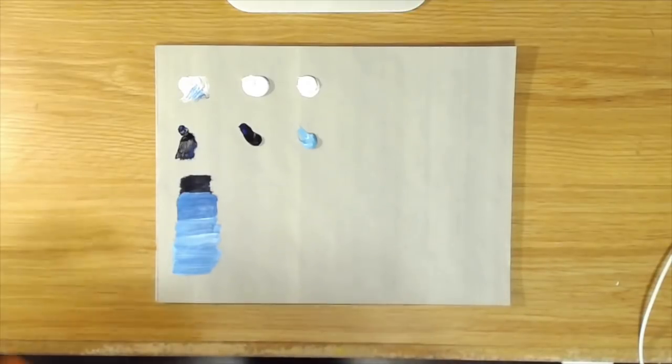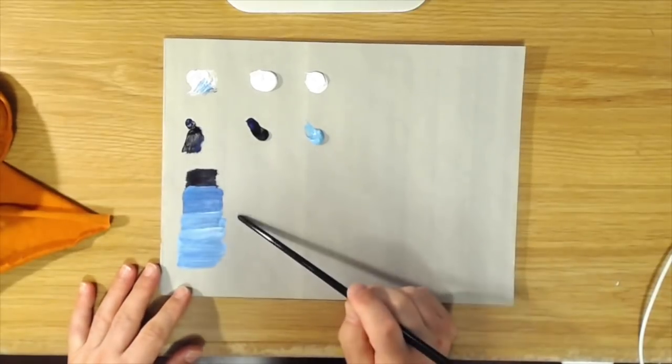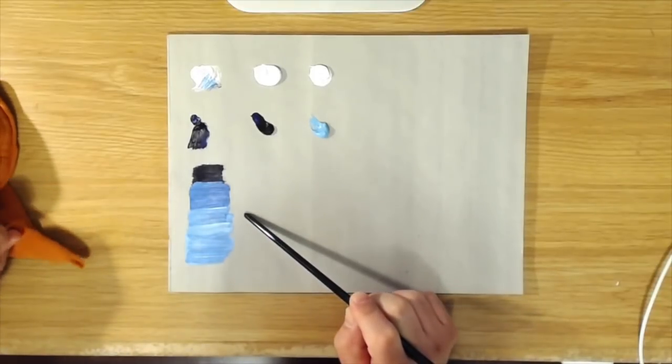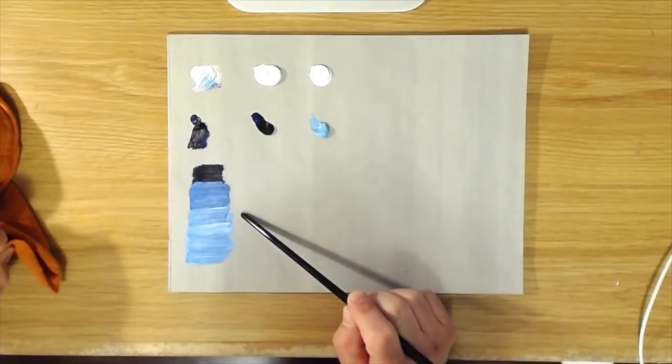So anyway, Prussian blue is very intense. It has a lot of tinting power and this is the blue that was used by Gainsborough to paint his famous Blue Boy painting.